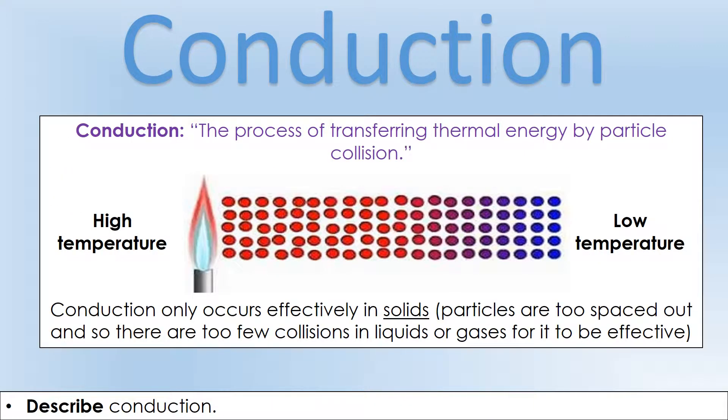Let's look at our first method of energy transfer, conduction. This is all about particle collisions. We can see on the diagram we've got some sort of material and we've put one end next to a flame. We're going to transfer thermal energy from the flame to the atoms of the material. The ones closest to the flame, their kinetic energy is going to rise, and they're going to collide with the particles around them.